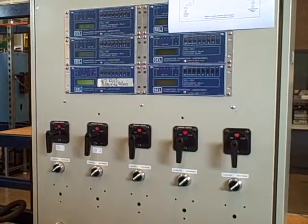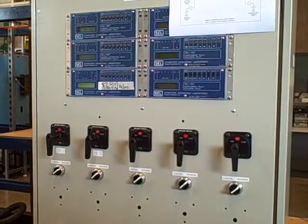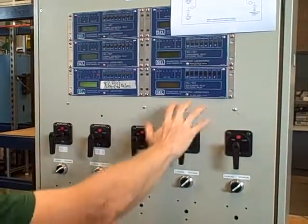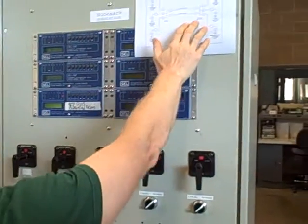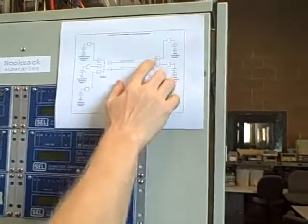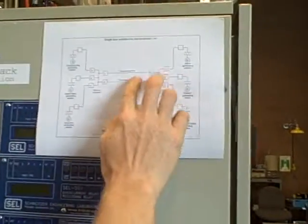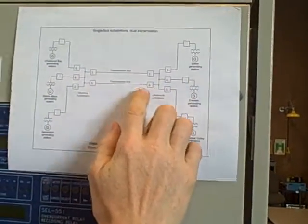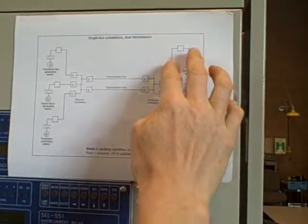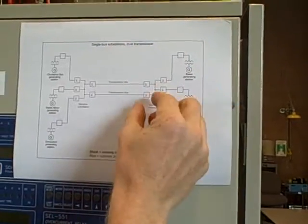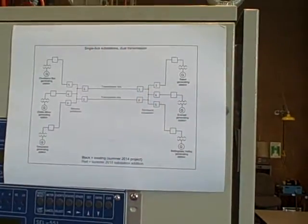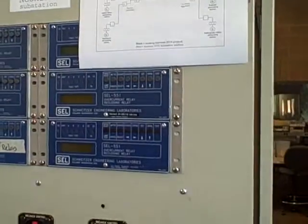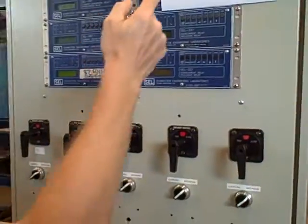Currently we have the substation set up — this is our Nooksack substation on the north end of our lab. We have five breakers on our single bus arrangement and these five breakers are tying two transmission lines and three lines from each generator onto a common bus. Currently we have all five breakers in the closed position.